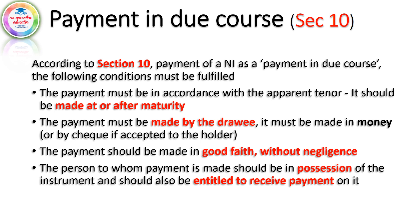Second, the payment must be made by the drawee. Drawee — we call it a check issue with the drawee or the bank. Drawee payment is made by the drawee. Third, it must be made in money. Payment is made in money, or the money is made by check. If accepted, it is a Holder. Payment is made by the bank. Third condition: payment should be made in good faith without negligence. Without any negligence — there is no negligence.